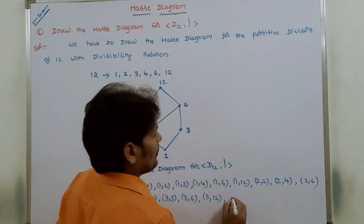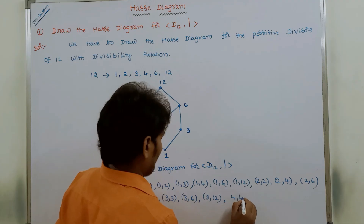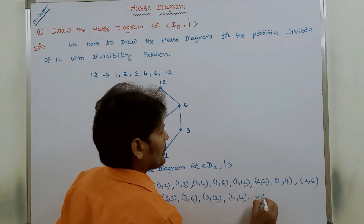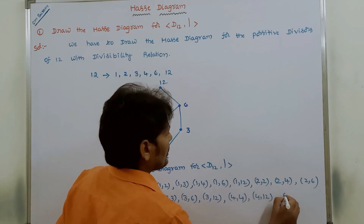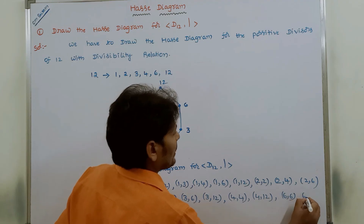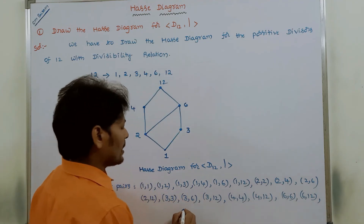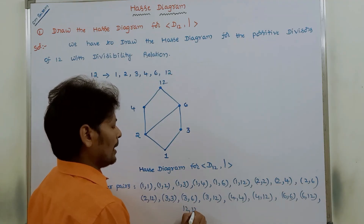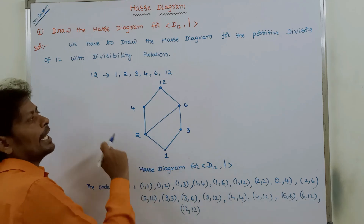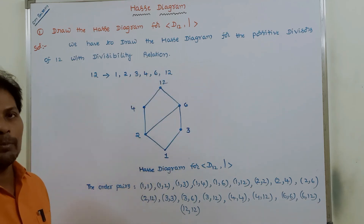Continuing, 4 divides 4 and 4 divides 12. Then, 6 divides 6 and 6 divides 12. Finally, 12 divides 12. These are all the ordered pairs we are getting from this Hasse Diagram.